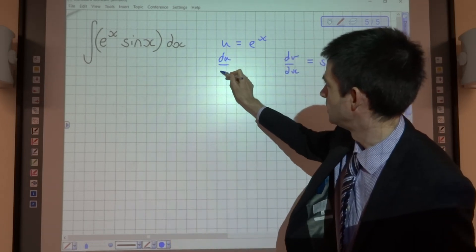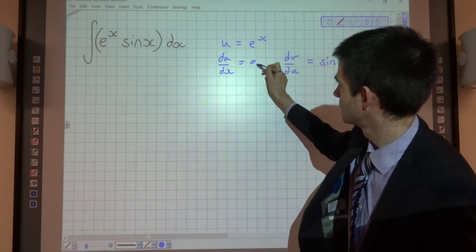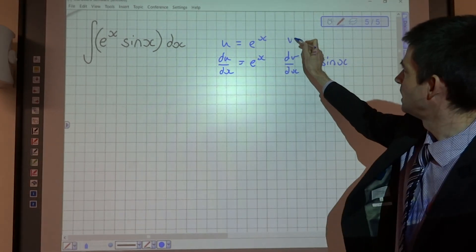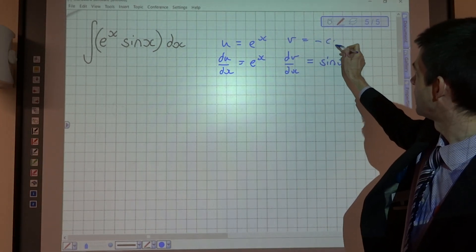That means I'm going to get du dx as e to the x and v as negative cos x.